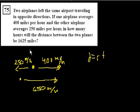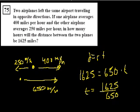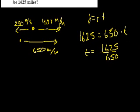So if we have to cover 1625 miles, because they want to know when does that happen, at what point are the planes that far from each other? That is equal to their relative velocity. They're separating from each other at 650 miles per hour. And we want to know how long that's going to take, so time is going to equal 1625 divided by 650.